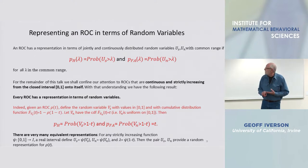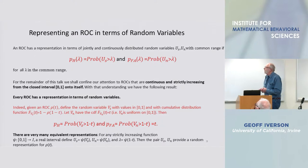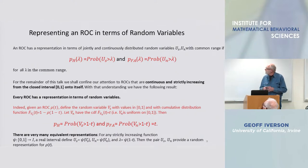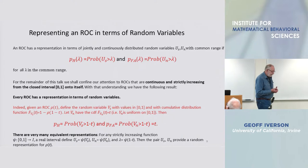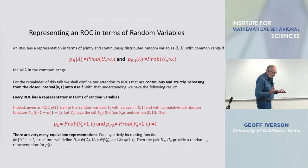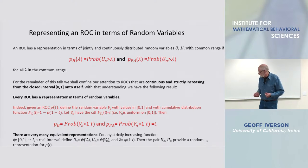We say that there is a representation of an ROC in terms of random variables indexed, two random variables, one indexed by signal one indexed by noise.